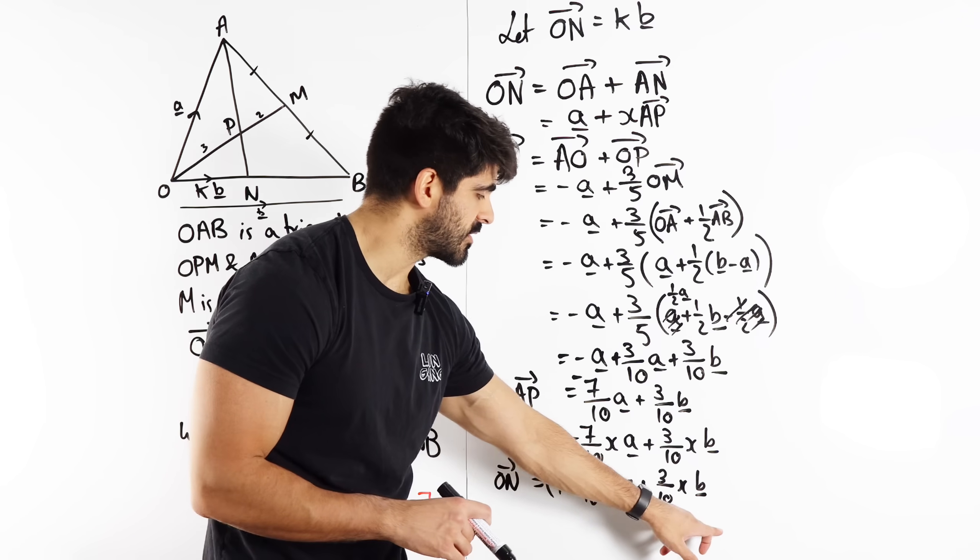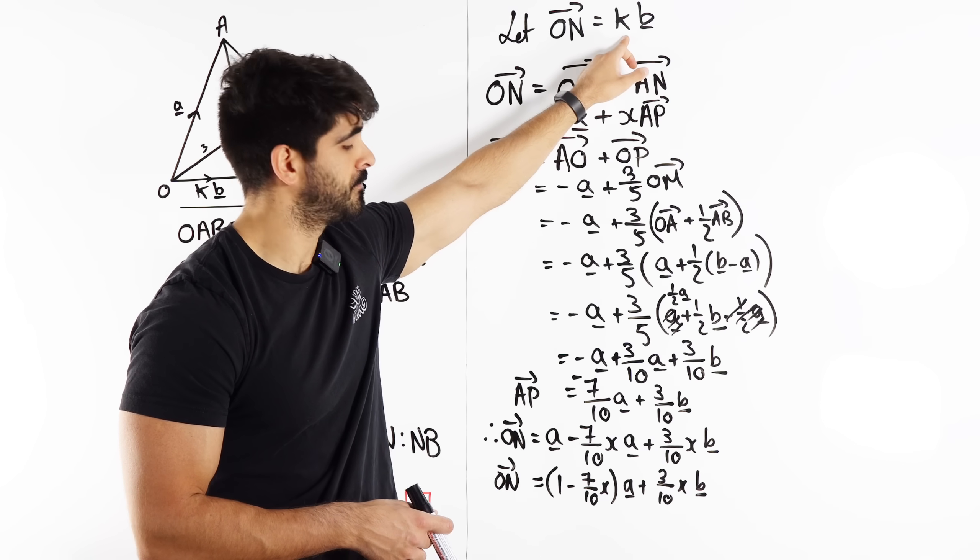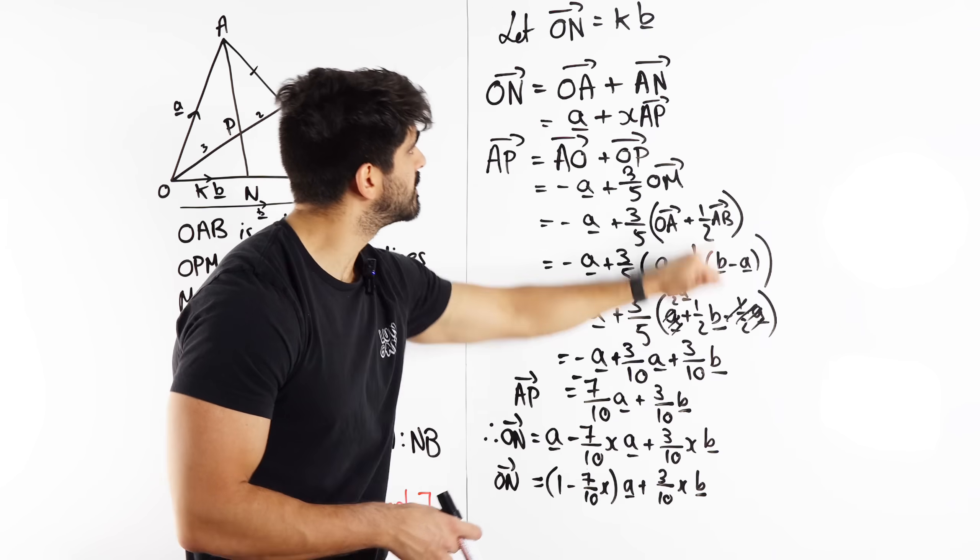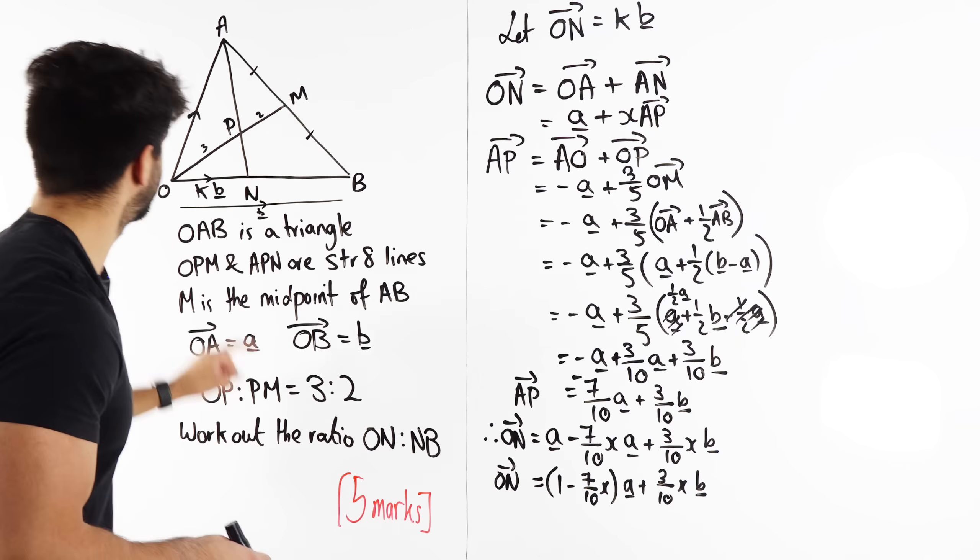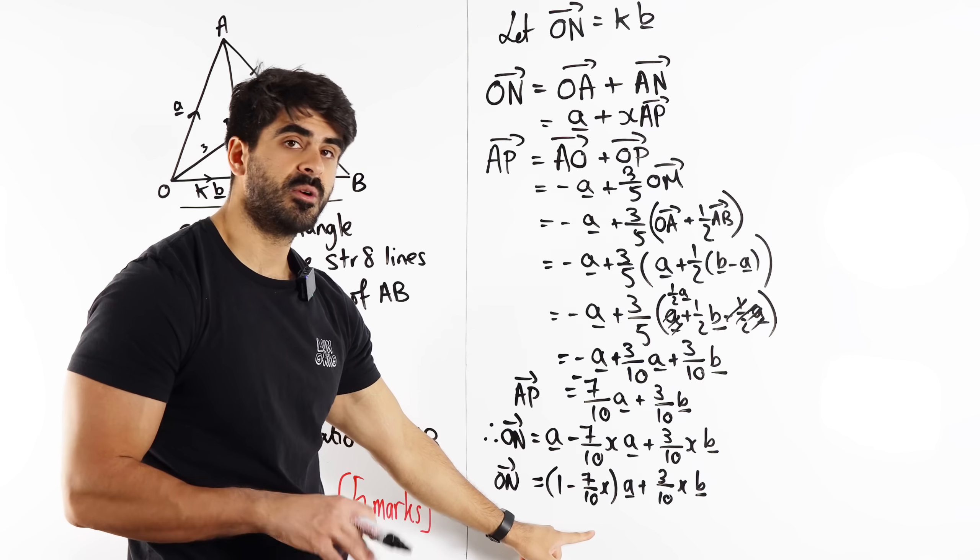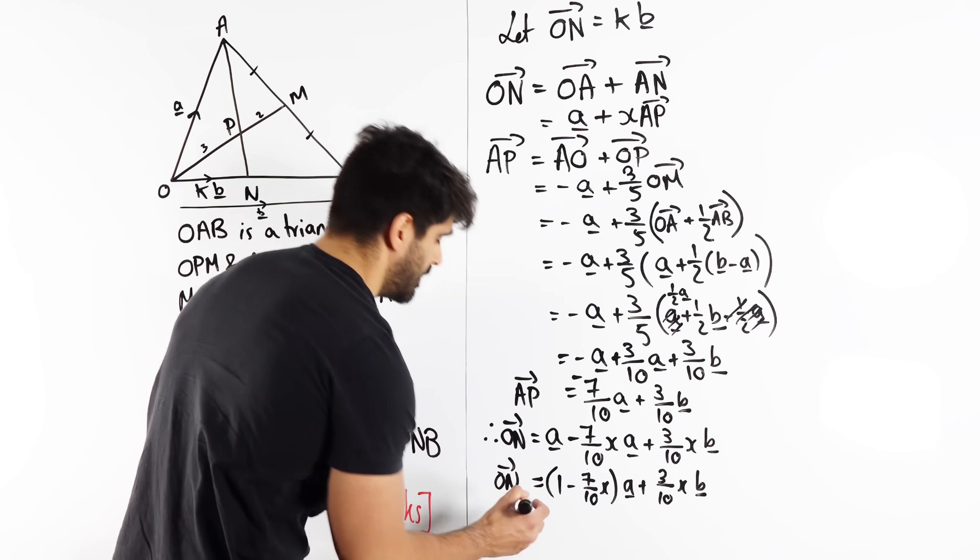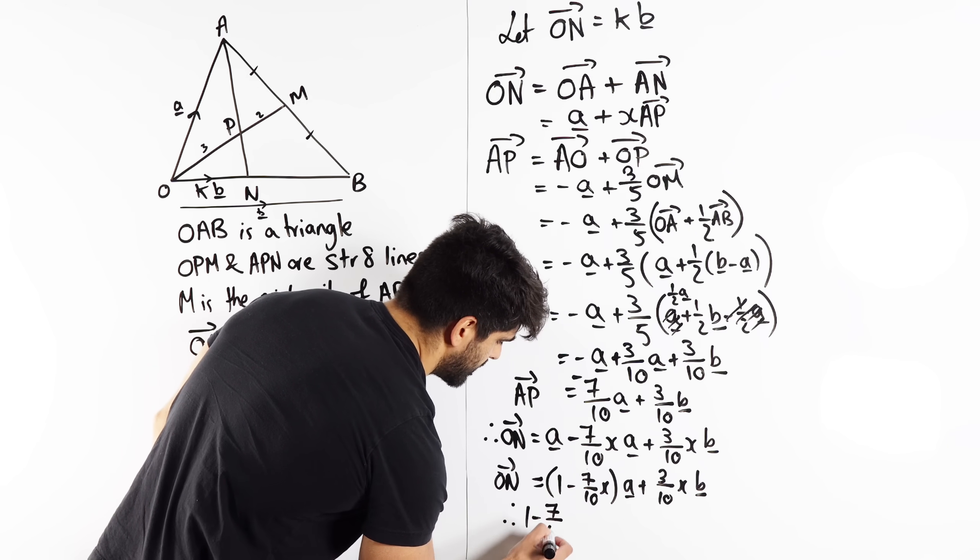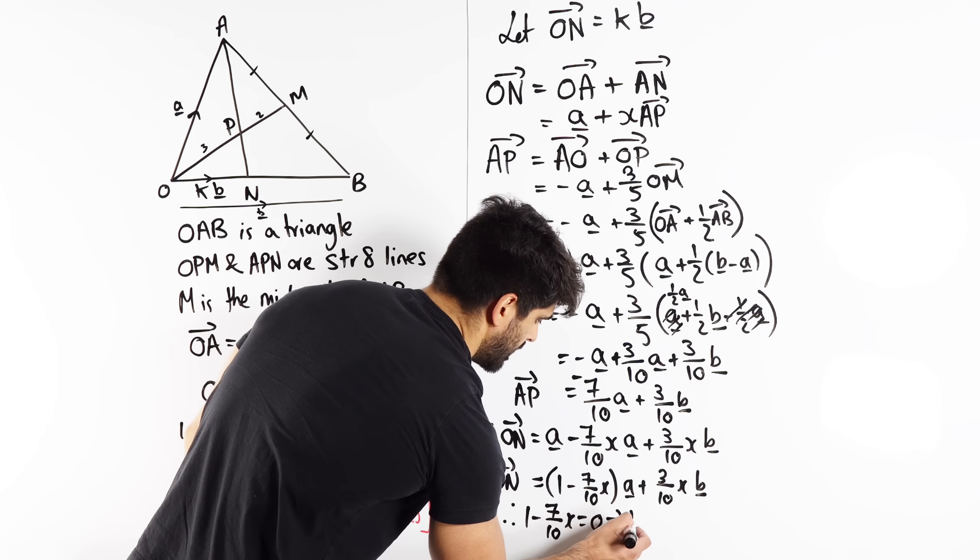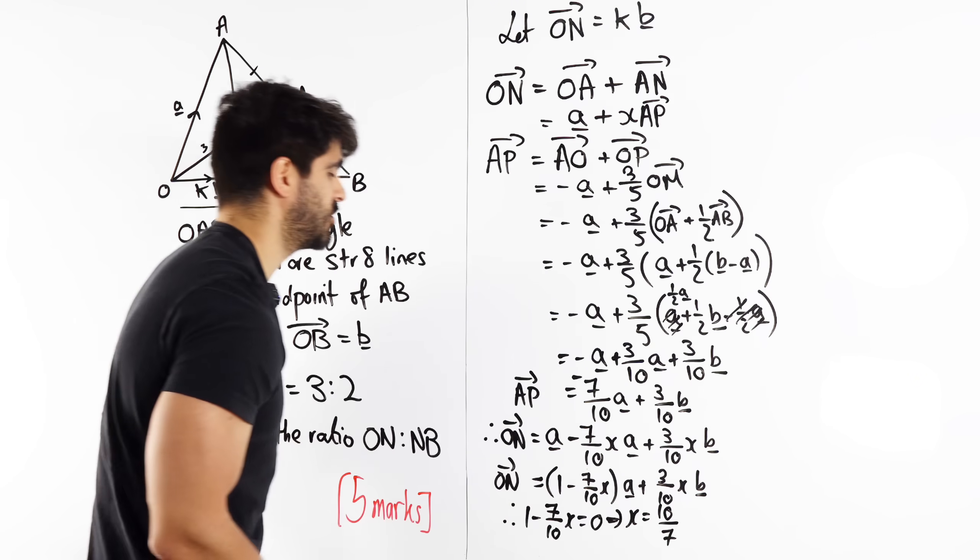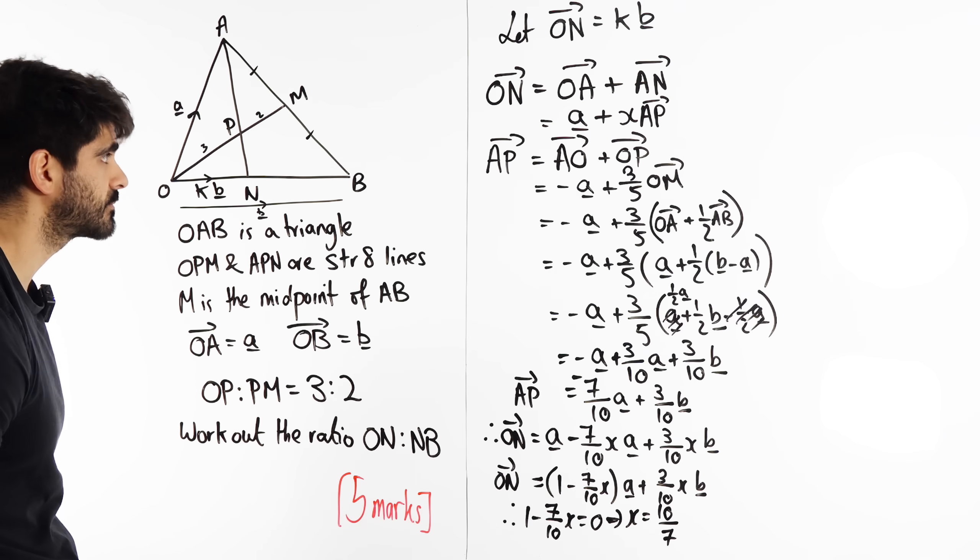So O to N is this. But I also know O to N is just some multiple B. Well, if you compare the two, they both have this B term, but this has an A term which shouldn't be there. O to N is horizontal. Why is there an A term? Well, it must mean that this bracket must be zero. So, therefore, one minus seven tenths X equals zero. So we got ten over seven. X is ten over seven. That's the extension. So X, it multiplies this by ten over seven to get to N.